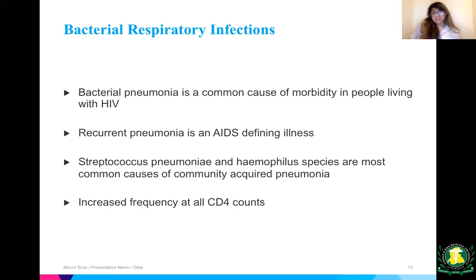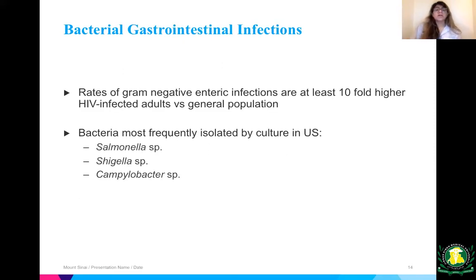Bacterial respiratory infections are also something to watch out for at all CD4 counts — a common cause of morbidity in people living with HIV. Recurrent pneumonia is an AIDS-defining illness. Streptococcus pneumoniae and Haemophilus species are the most common community-acquired pneumonia in this population, with increased frequency at all CD4 counts. Regarding bacterial GI infections: gram-negative enteric infection rates are at least 10-fold higher in HIV-infected adults versus the general population. The bacteria most frequently isolated by culture in the US are Salmonella, Shigella, and Campylobacter.